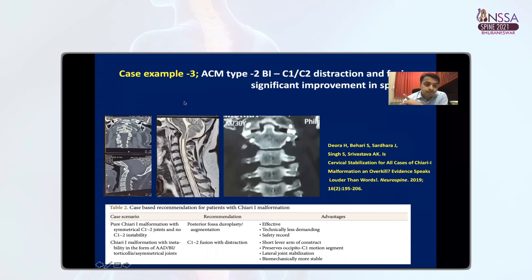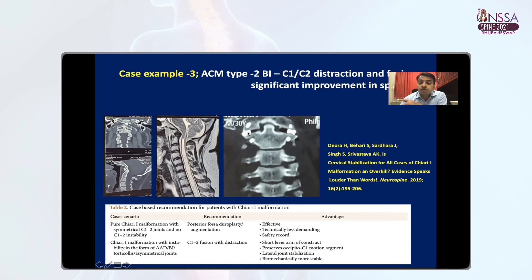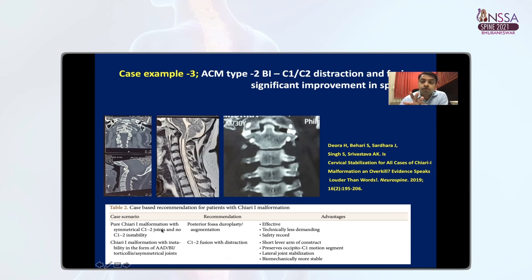For ACM Type 2 with BI: always remember that BI is a congenital progressive C1-C2 instability. If you put a spacer — just 2-3 mm distraction and fixation without decompression — it really helps in significant improvement in spasticity. Our protocol: BI with ACM — C1-C2 distraction and fixation. Pure ACM with symmetrical joints, no C1-C2 instability, no AAD, no BI — we still follow foramen magnum decompression only.